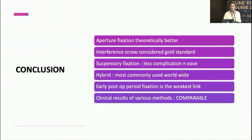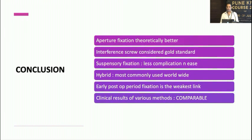In summary, aperture fixation with an interference screw is theoretically superior and considered the gold standard, especially for bone-to-tendon grafts with the best hold. Suspensory fixation has fewer complications and is easier for the surgeon. The hybrid approach — suspensory fixation on the femoral side and aperture fixation on the tibial side — is most commonly used worldwide. The early post-operative period represents the weakest link, and fixation quality should guide rehabilitation. Clinical results across methods remain broadly comparable.